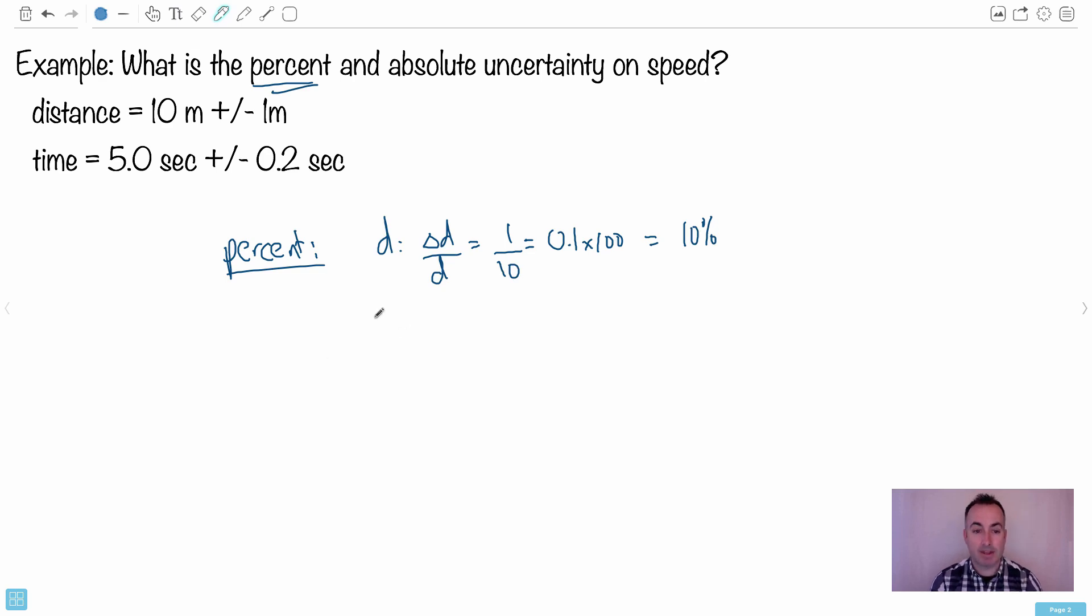We can do the same thing for time. For the time, we have delta T over T. I'm doing the fractional uncertainty on the time, and it's 0.2 divided by 5. I do that, what do I get? I get 0.04. So 0.04 times a hundred of course to get the percent, and I end up with four percent.